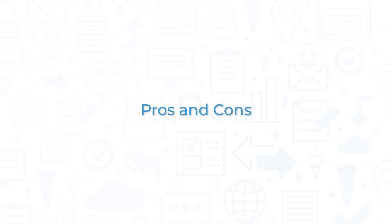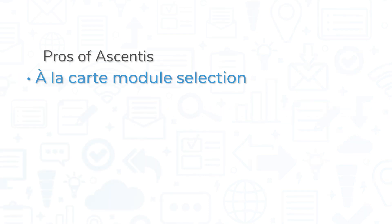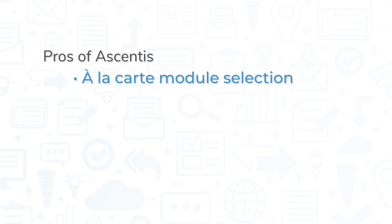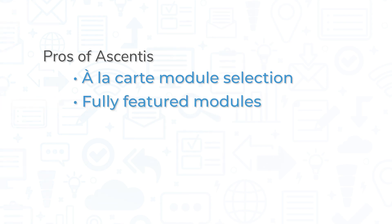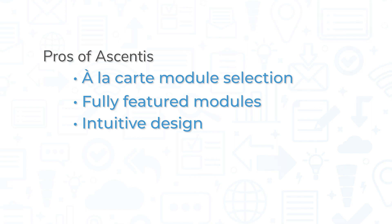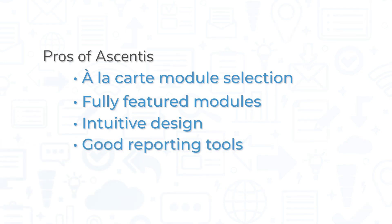Ascentus is a top-rated system, but it still comes with its pros and cons. One of the biggest pros of Ascentus is its a la carte approach to letting you build an HCM solution for your company. The modules are fully featured, and the system offers an intuitive design that's easy to learn. Ascentus also offers a solid reporting tool that gives managers a lot of flexibility in how they want to build dashboards.